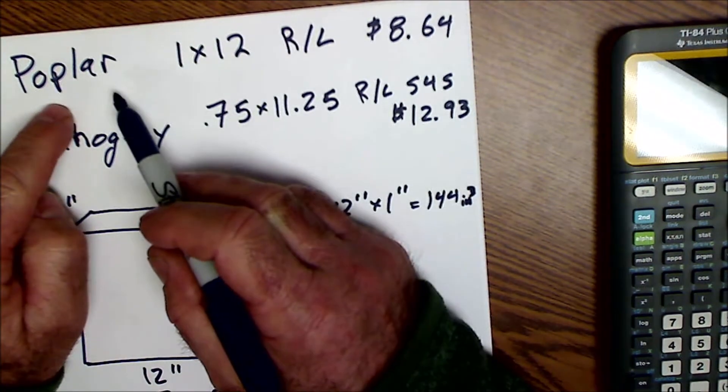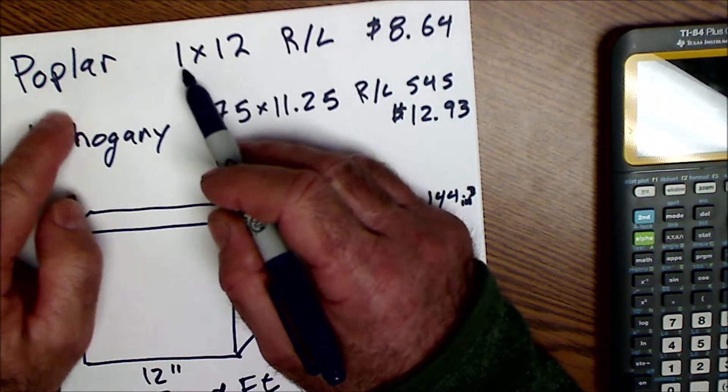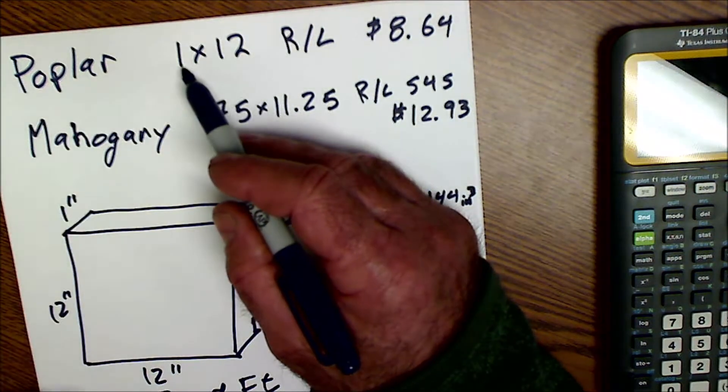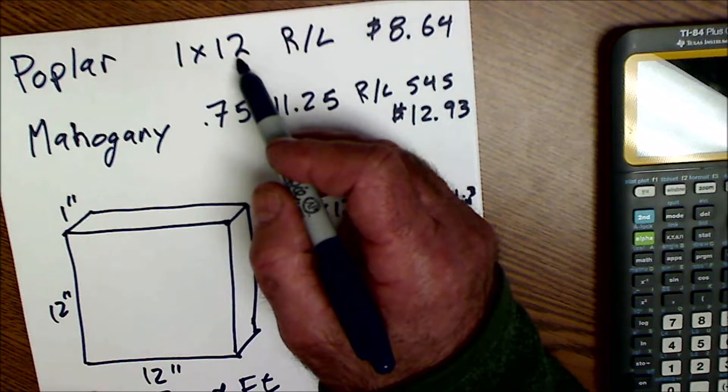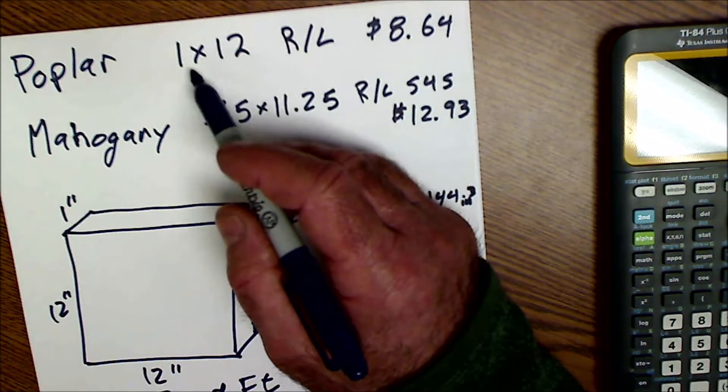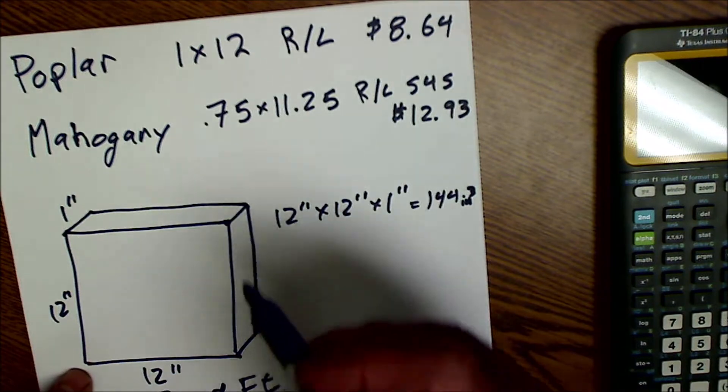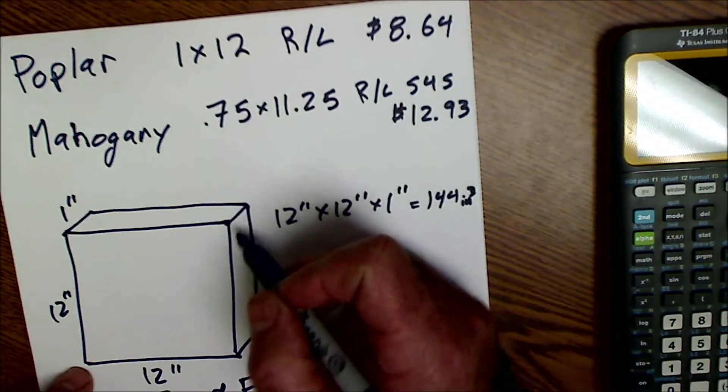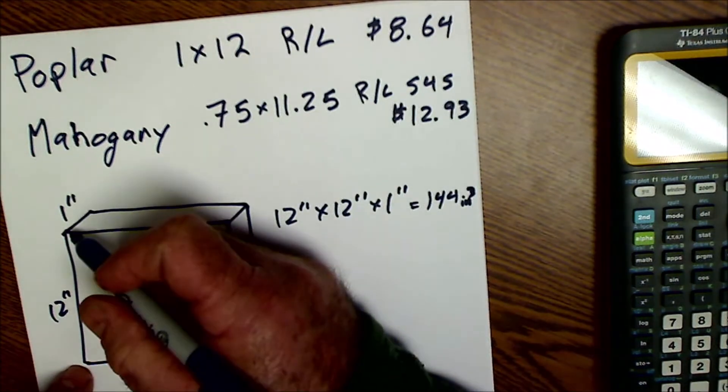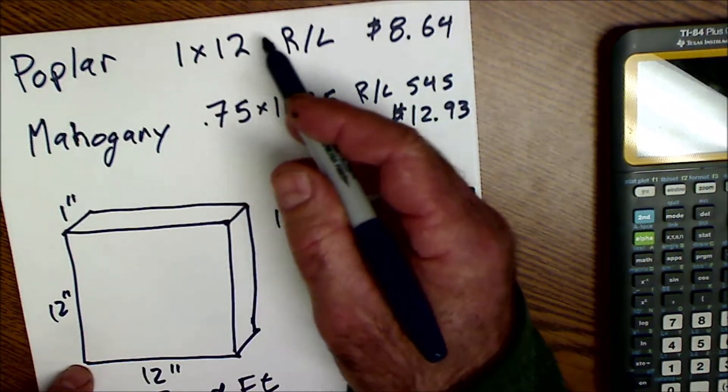So let's start with the poplar. The nominal dimensions are 1x12. It actually might be machined all the way down to 13 sixteenths and 11 and a half, but it's advertised as 1x12. So that's actually going to be 1 inch thick, 12 inches wide by the random length. Let's say I just buy a foot of it. So it's going to be 1x12x12.